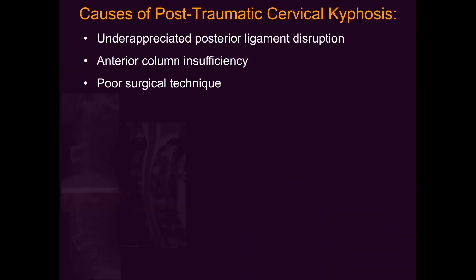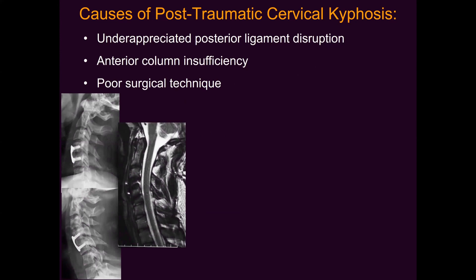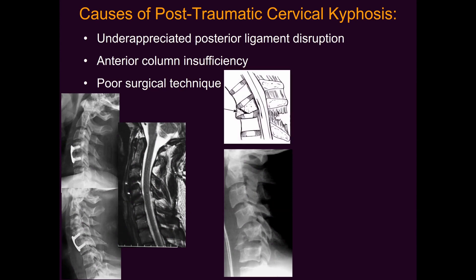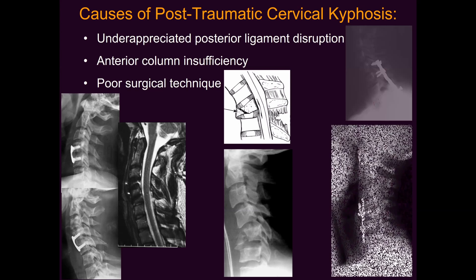Underappreciated posterior ligamentous disruption is a common cause, as in this patient who had a C4-5 ACDF for facet dislocation but had an unappreciated ligamentous injury at the lower level. Anterior column insufficiency can be problematic and lead to post-traumatic kyphosis, especially when associated with a posterior ligamentous injury, as is typically the case with flexion teardrop or flexion compression injuries, which are bad actors when it comes to post-traumatic deformity.